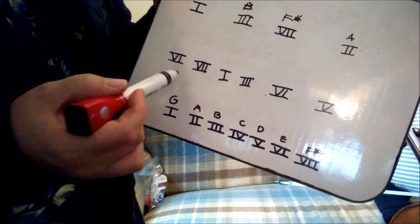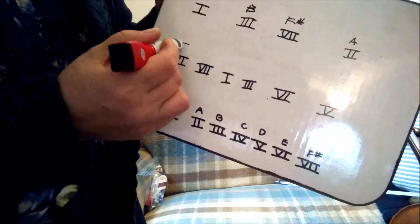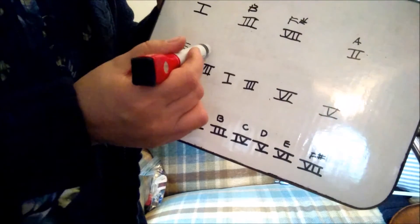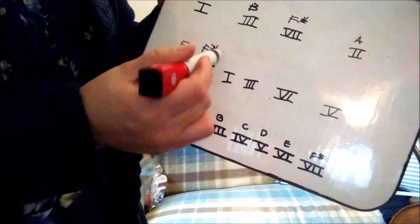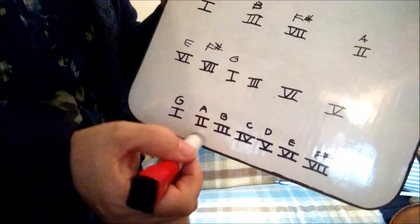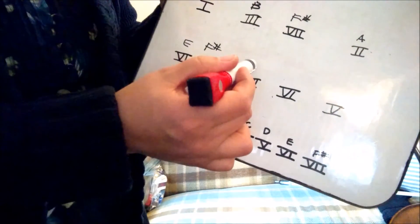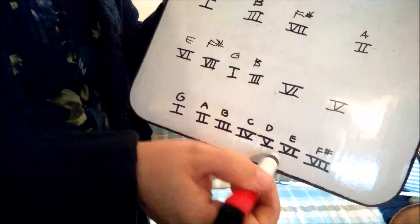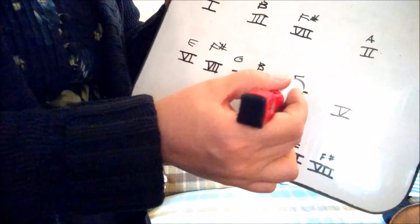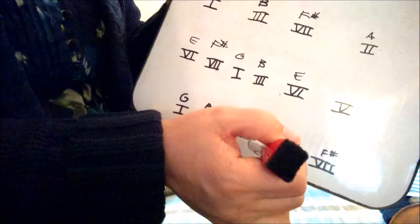6 is going to be E, 7 is F sharp, 1 is G, 3 is B, 6 is B, and 5 is D.